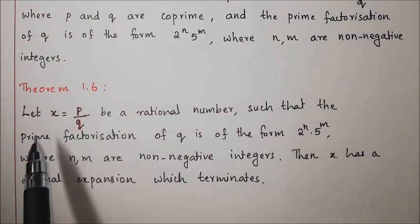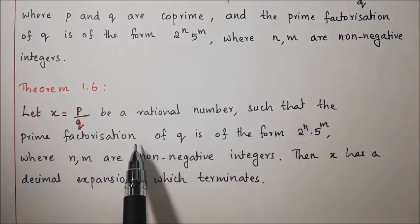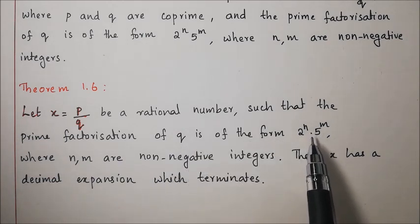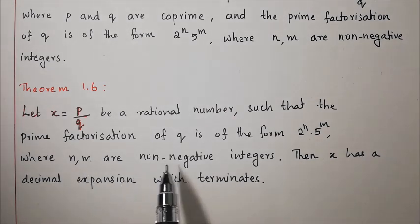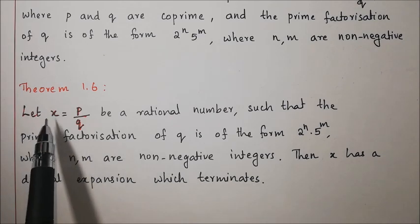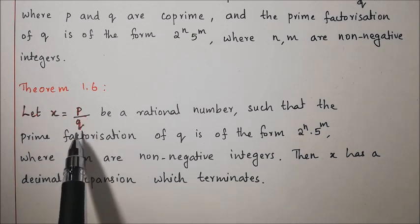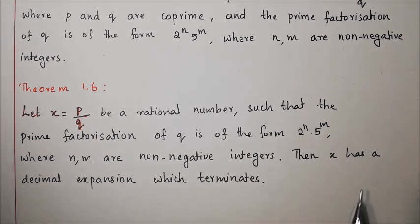Theorem 1.6: Let x = p by q be a rational number such that the prime factorization of q is of the form 2 to the power n into 5 to the power m, where n and m are non-negative integers. Then x has a decimal expansion which terminates.